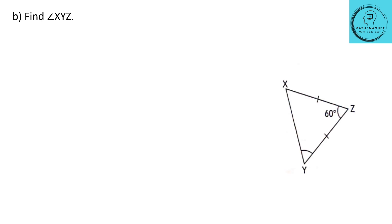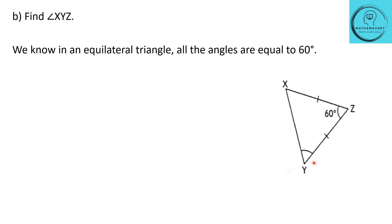The next question: find angle XYZ. They have given triangle XYZ with one angle as 60 degrees. Since the question already mentions this is an equilateral triangle, and all angles in an equilateral triangle are equal to 60 degrees, angle XYZ equals angle YZX equals angle ZXY, which is 60 degrees.